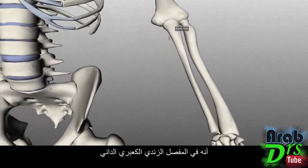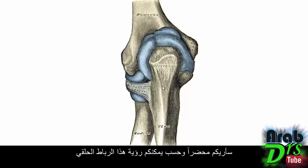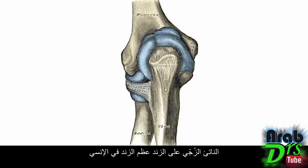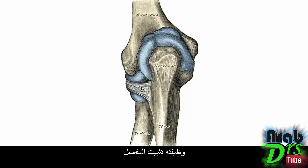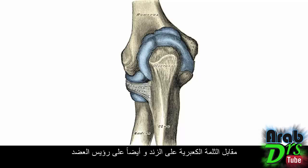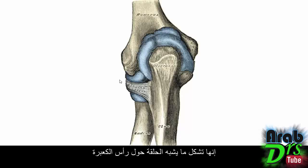At the proximal radio-ulnar joint, there's a ligament called the annular ligament. Looking at a posterior view of the left arm, you can see this annular ligament wrapping around the head of the radius. It stabilizes the joint and allows the radius to rotate against the radial notch on the ulna and also on the capitulum of the humerus. It blends with the fibrous membrane of the joint capsule, and it's called annular because annulus in Latin means ring — it forms a ring around the head of the radius.